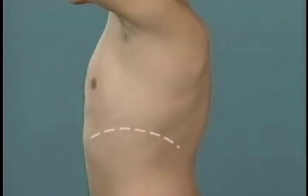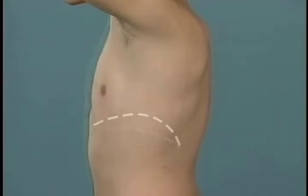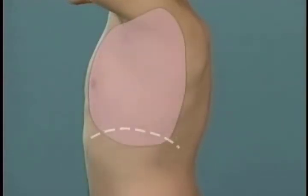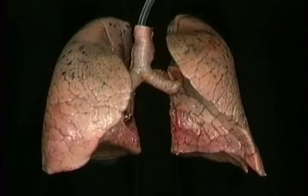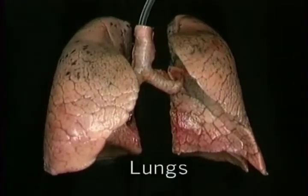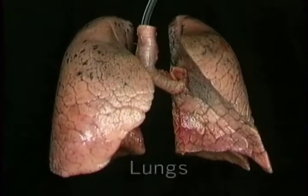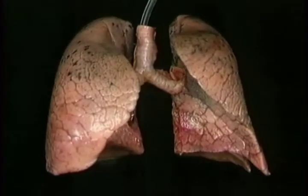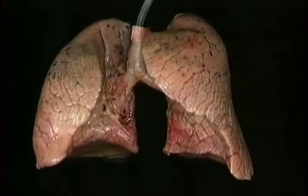With each breath in and each breath out, there is an increase and a decrease in the volume of the lungs. Here are the lungs by themselves, seen from in front. They're being inflated with air so as to maintain their shape.